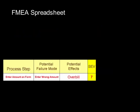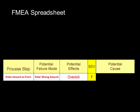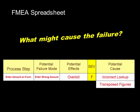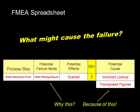From there we're going to identify potential causes. We're going to ask: what might cause this failure? Each failure might have multiple potential causes. So we'll ask why did we get the wrong amount — well, we looked it up wrong, we transposed figures, or maybe we did a wrong calculation.